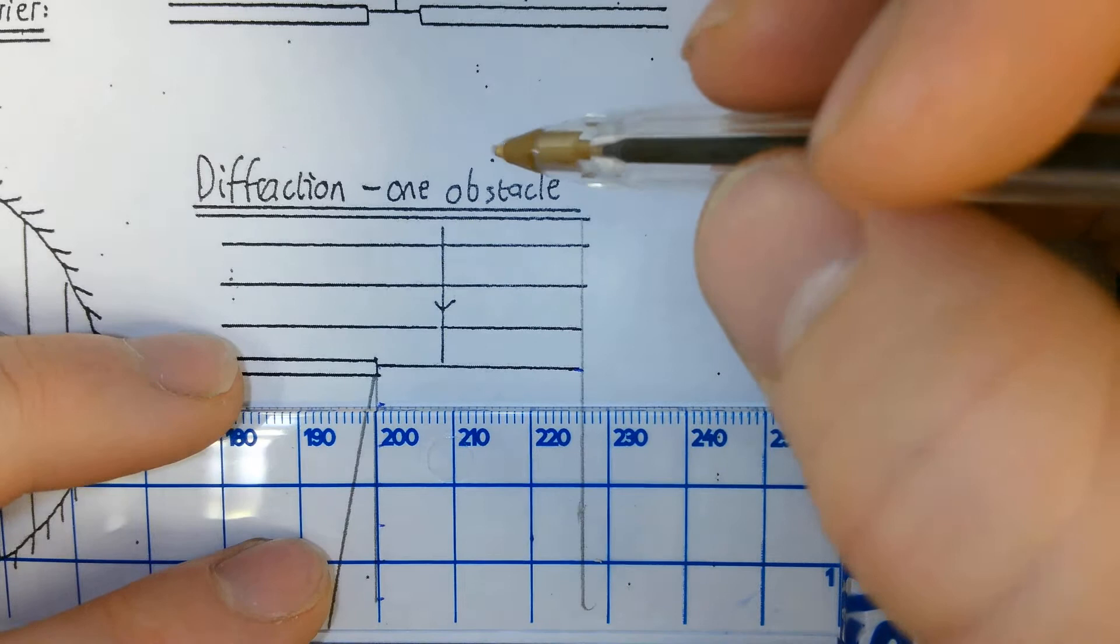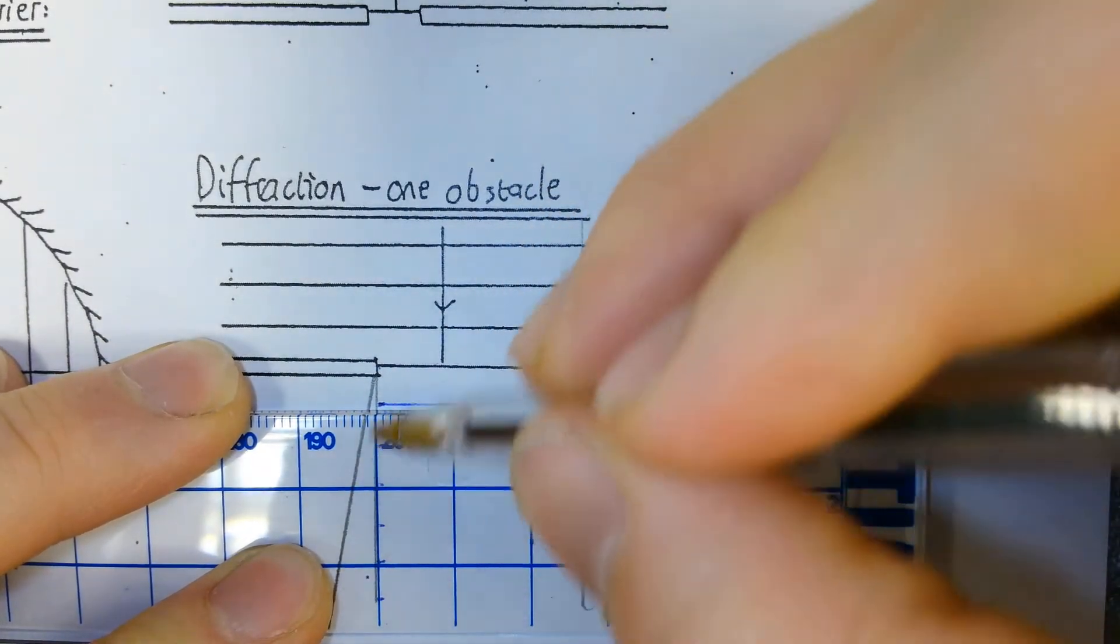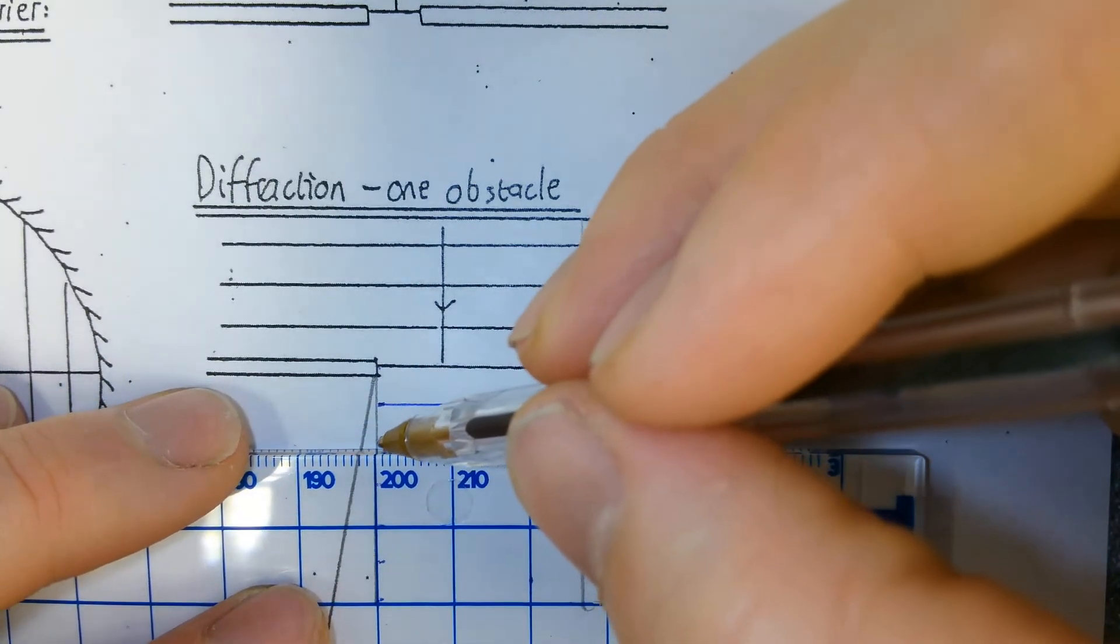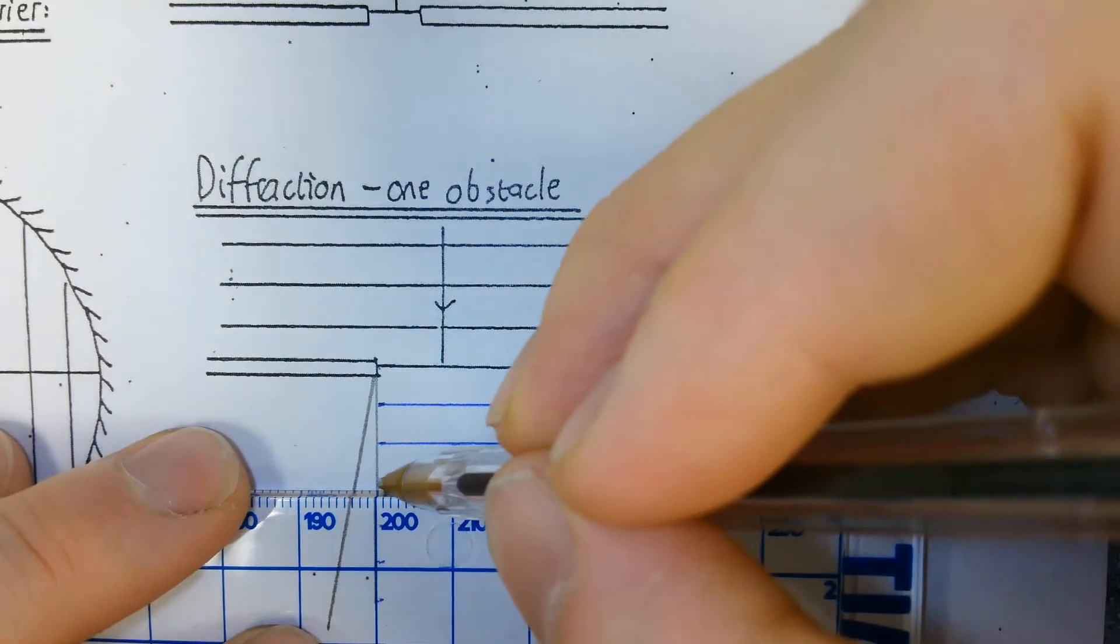I'm just going to draw all of these. I'm using this line on the ruler to make sure the waves are at 90 degrees to the direction of propagation.